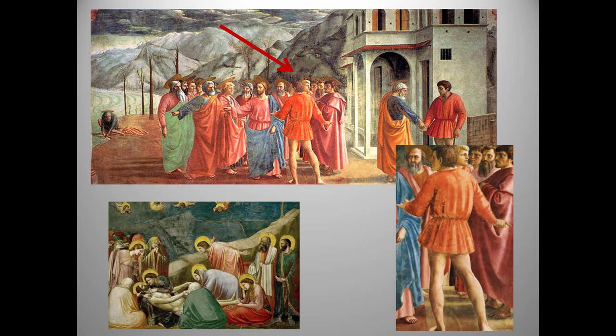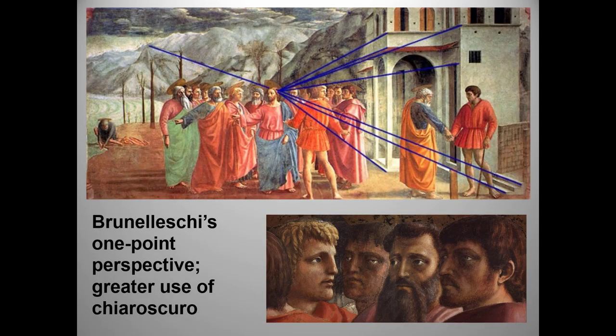What do you think it might be? Tribute Money is one of the earliest paintings to employ mathematical perspective. Masaccio was a close friend of Brunelleschi's and knew his studies of mathematical one-point perspective very well. Note how the orthogonals — the lines of sight leading to a vanishing point — converge on Christ's head. And as a close-up of some faces reveals, Masaccio also made far more use of contrasts of light and dark to define volume and space.